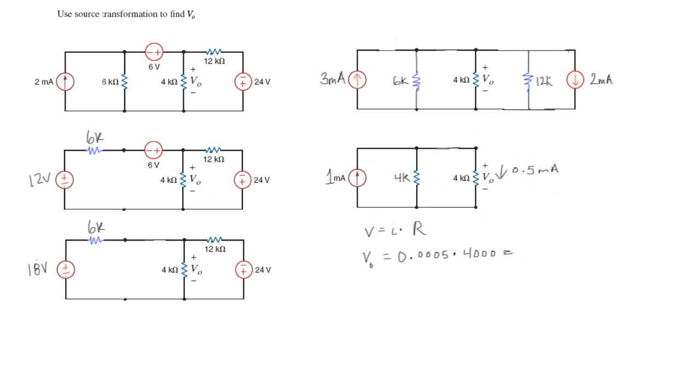So our answer, VL equals 2 volts. And like I said, the voltage drop across this is also going to be 2 volts. And that's how you do source transformation.